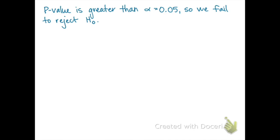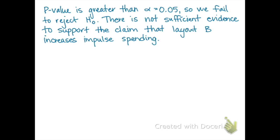In conclusion, we find that the p-value is greater than the significance level of alpha equals 0.05, so we fail to reject the null hypothesis. Because we decided to fail to reject the null hypothesis, that means we do not have evidence to support the company's claim that layout B is going to increase impulse spending.